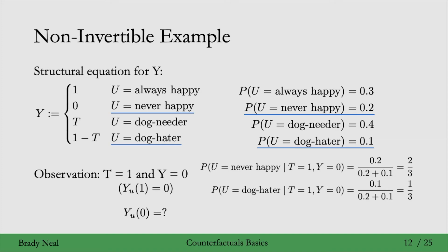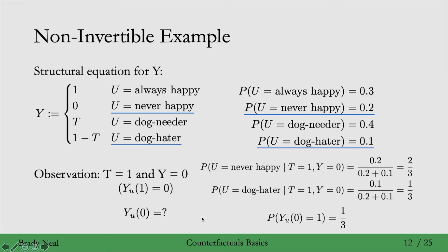This new distribution of u is very useful. The thing we're interested in is the counterfactual y_0. If this person is a never-happy person, y_0 would be 0 because y is always 0. If this person were a dog-hater, because they're not taking the treatment (t equals 0), then y would be 1. So this counterfactual takes on the value of 1 with probability one-third, and the value of 0 with probability two-thirds. We don't get the counterfactual with probability 1 — not all the probability is concentrated on one value. Rather, we get a distribution for the counterfactual.